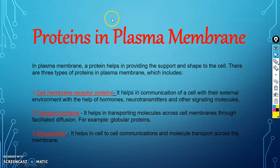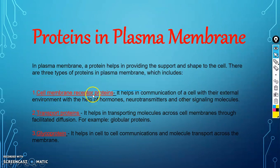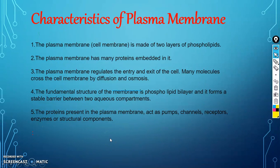Proteins in the plasma membrane help in providing support and shape to the cell. There are three types of proteins found in the plasma membrane: receptor proteins, transport proteins, and glycoproteins. Receptor proteins receive hormones, neurotransmitters, and other signaling molecules. Transport proteins help in transporting molecules. Glycoproteins help in cell-to-cell communication.